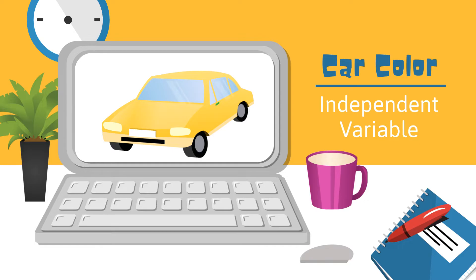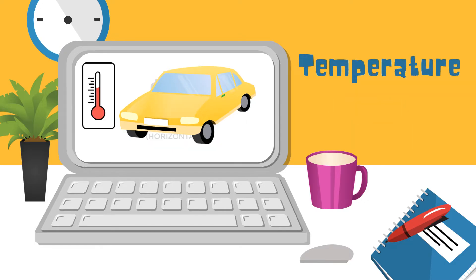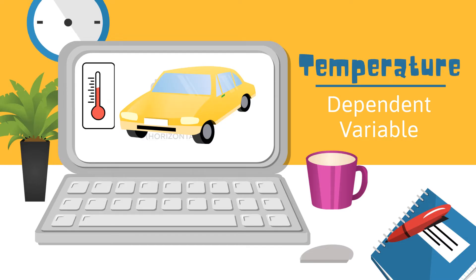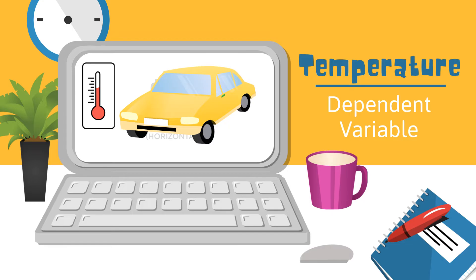The temperature inside each car is your dependent variable. It may vary according to the car's color. You will be measuring this variable by taking the temperature inside the car every 30 minutes. Remember, the dependent variable is what you are measuring.